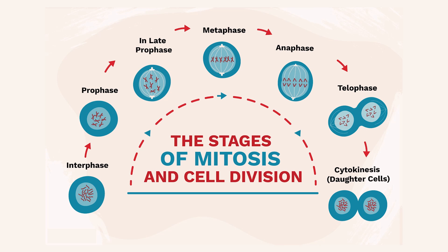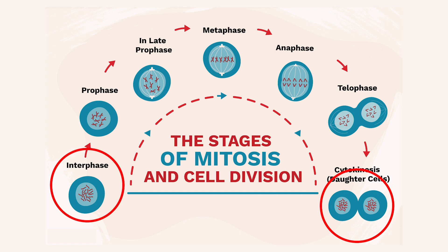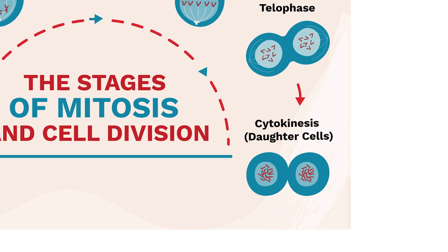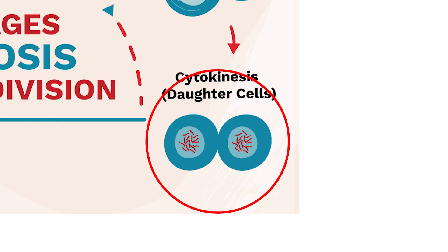Mitosis is a process of cell division that results in two genetically identical daughter cells from a single parent cell. It is essential for growth, repair, and asexual reproduction in eukaryotic organisms. The process ensures that each daughter cell receives an exact copy of the parent cell's DNA.